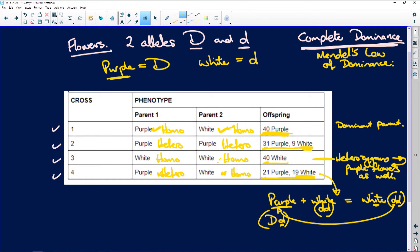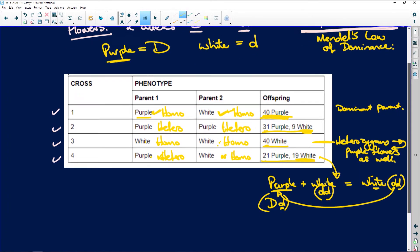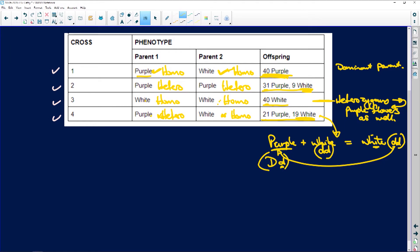So state the dominant flower. We know that it's the purple flower. Use cross one to explain your answer. So we're going to use cross one to explain our answer. Cross one was purple times white, and all the offspring are purple.